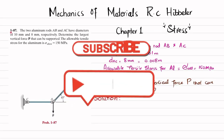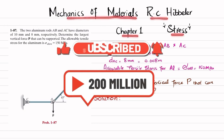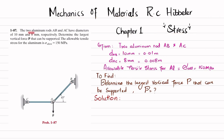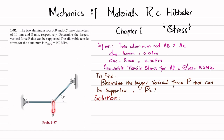Welcome back. In this video we are going to solve problem 1-87 taken from chapter one, Stress, in the book Mechanics of Materials by R.C. Hibbeler. The problem states: two aluminum rods AB and AC have diameters of 10 millimeter and 8 millimeter respectively. Determine the largest vertical force P that can be supported. The allowable tensile stress for aluminum is 150 megapascal. Rod AB makes an angle of 45 degrees with the horizontal.